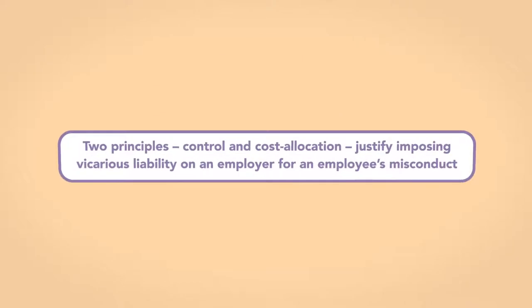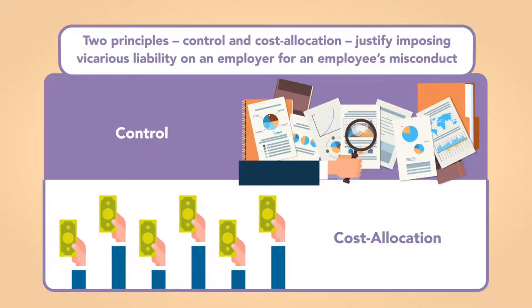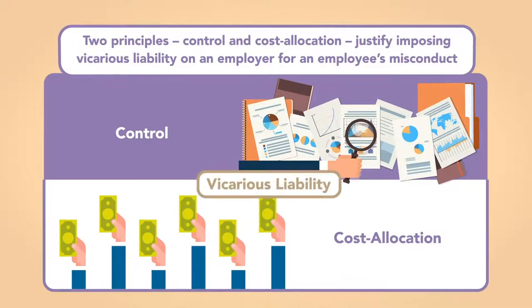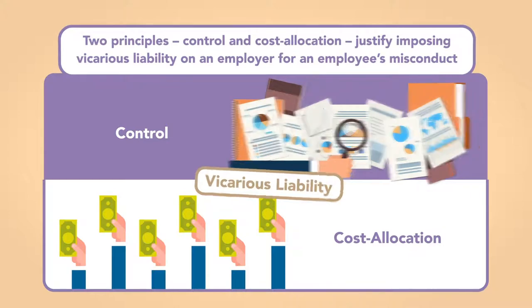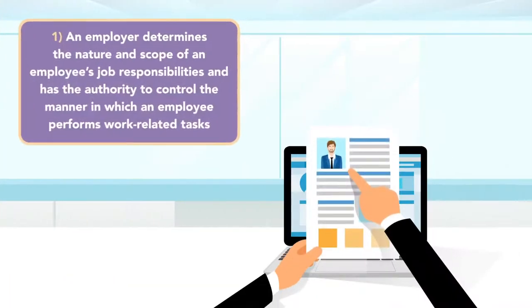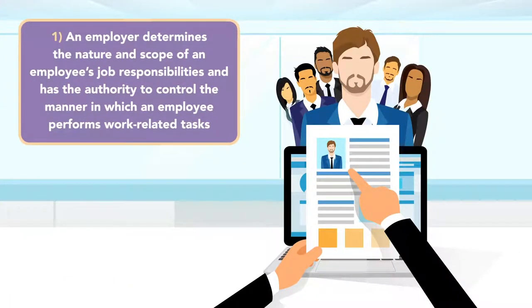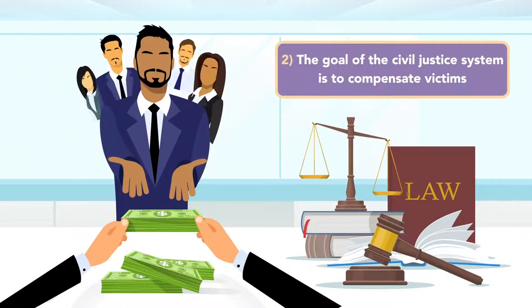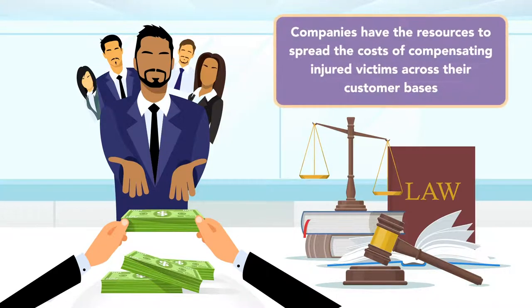Two principles — control and cost allocation — justify imposing vicarious liability on an employer for an employee's misconduct. First, an employer determines the nature and scope of an employee's job responsibilities and has the authority to control the manner in which the employee performs work-related tasks. Second, the goal of the civil justice system is to compensate victims.